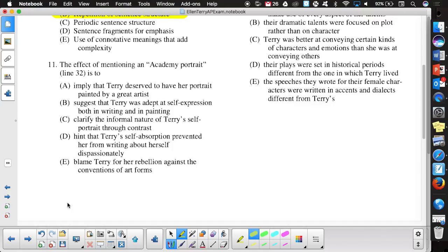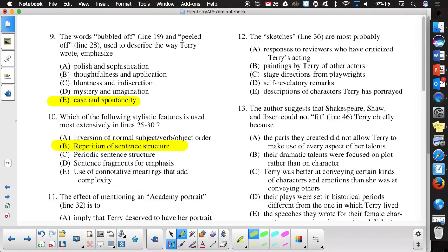Why C? Contrast. It's not an Academy portrait, so you're clarifying the informal nature of her self-portrait through contrast. The sketches that get mentioned talks about like arm, nose, different parts of body. Keep in mind, these are more writing things that are taking place, so it's not an image. Well done. Seven out of 13, eight out of 13 would be a 3, nine out of 13 would be a 4, ten or higher should be a 5.